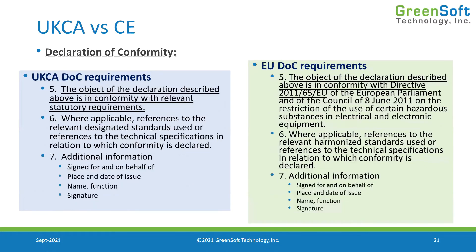Going further down the list, item number five: we have to have a statement that the object of the declaration is in conformity with the relevant statutory requirements, and then list those. The EU DoC requirements also require you to list the relevant directives and regulations. In the case of RoHS, there is a specific statement you must make — that you comply with the EU RoHS Directive 2011/65/EU, etc. — so you have to put the whole title in there, as stated in the actual directive itself. Although the information is the same, the actual text you have to put in is slightly different because you're referencing different regulations.